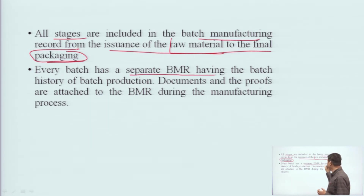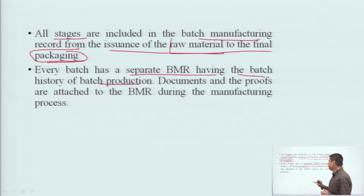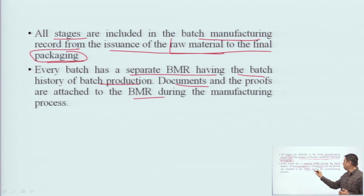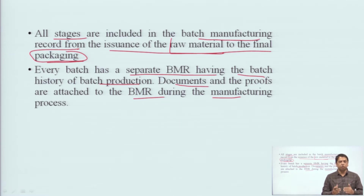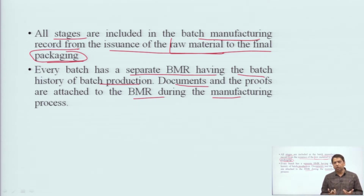Each batch has a separate BMR, having the batch history of the batch production. The documents and proofs are attached to the BMR during the manufacturing process. As we receive raw material, there will be receipts, LRs from transportation, receipts from when material is shipped from the warehouse to the manufacturing area, and signatures of the relevant people indicating how much was issued and how much was actually received.